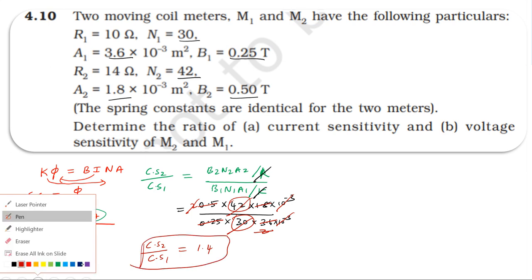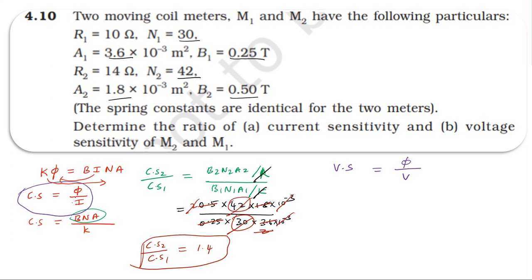Now for voltage sensitivity: voltage sensitivity is deflection per unit volt, which equals current sensitivity divided by resistance. So voltage sensitivity equals current sensitivity divided by resistance from Ohm's law.